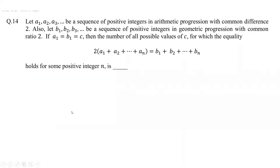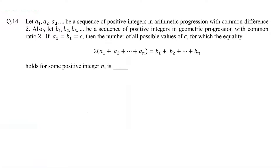In this question, two sequences are given: an AP with common difference 2 and a GP with common ratio 2. The first terms of both the AP and GP are equal, and two times the sum of the first n terms of the AP is equal to the sum of the first n terms of the GP.